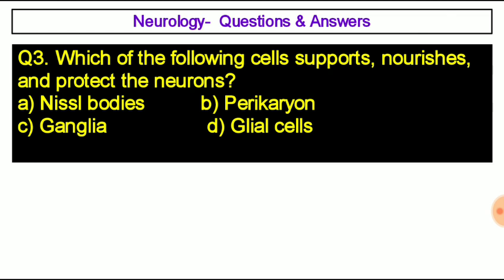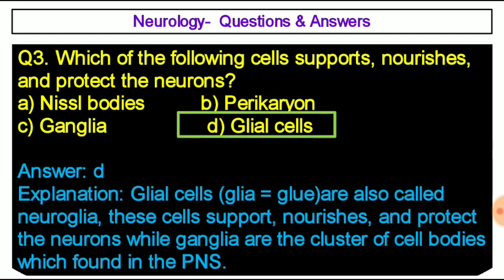Question number three: Which of the following cells supports, nourishes, and protects the neurons? Option A: cell bodies, option B: pericardium, option C: ganglia, option D: glial cells. The correct answer is option D, glial cells. 'Glia' means glue — glial cells are also called neuroglia. These cells support, nourish, and protect the neurons, while ganglia are clusters of cell bodies found in the peripheral nervous system.